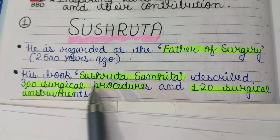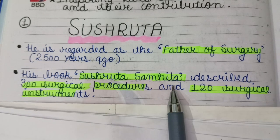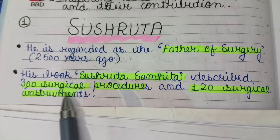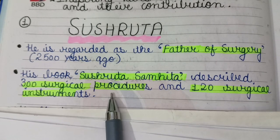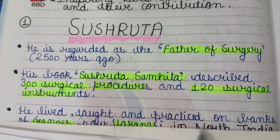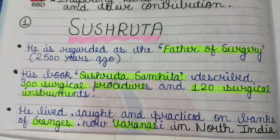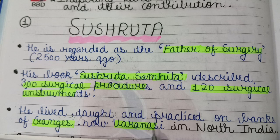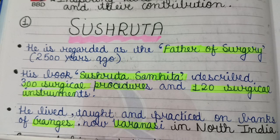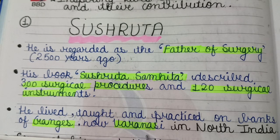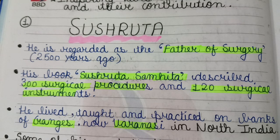His book, Sushruta Samhita, described approximately 300 surgical procedures and 120 surgical instruments. He lived, taught, and practiced on the banks of the Ganges, now in Varanasi in North India.